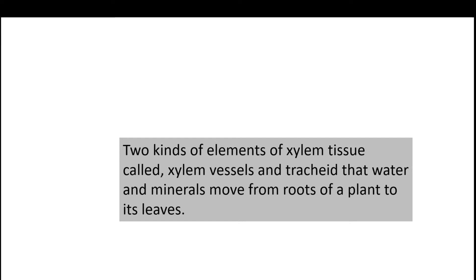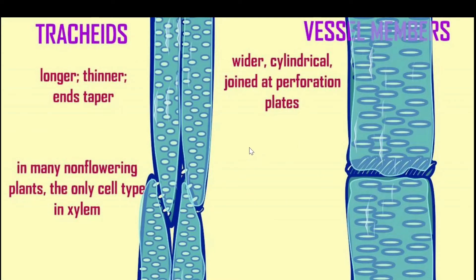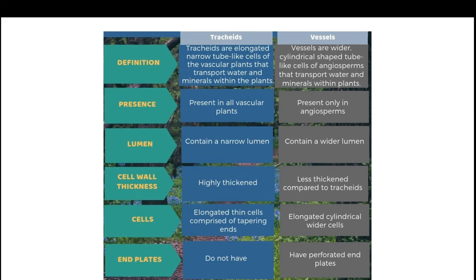Tracheids and vessels play a key role in transporting water and minerals from roots to the tips of a plant. Here in this picture you can see the differences between tracheids and vessels. Tracheids are actually longer and thinner with tapering ends, whereas vessels are wider and cylindrical with perforation plates. Tracheids are elongated narrow tube-like cells with tapering ends, whereas vessels are wider cylindrical shaped tubes.